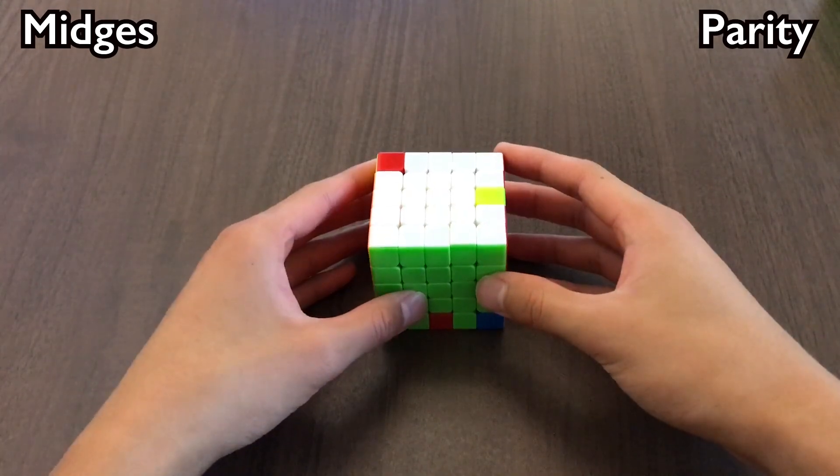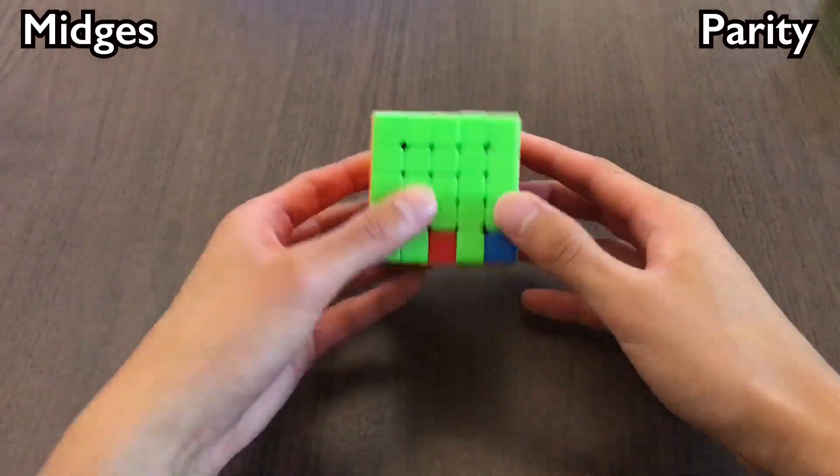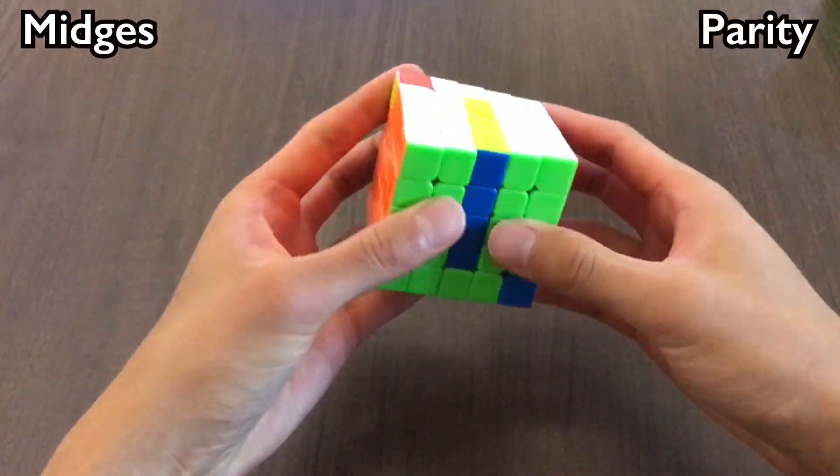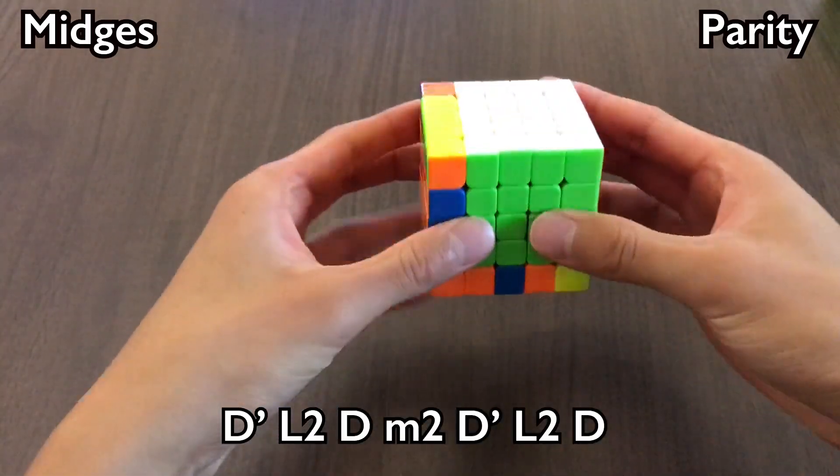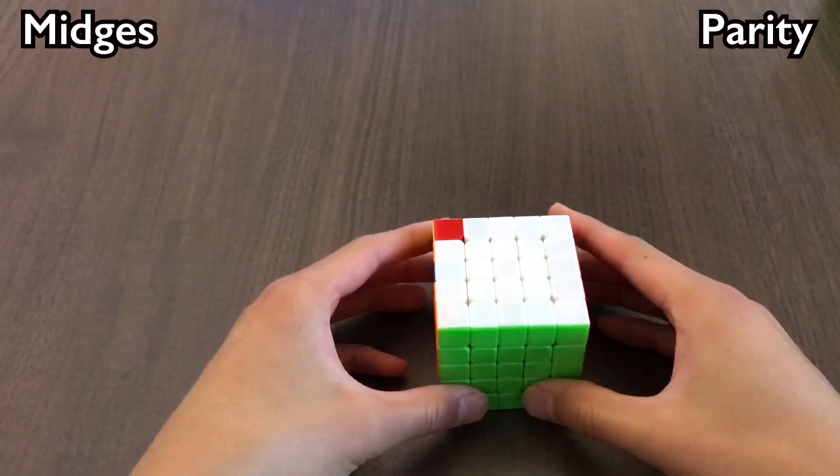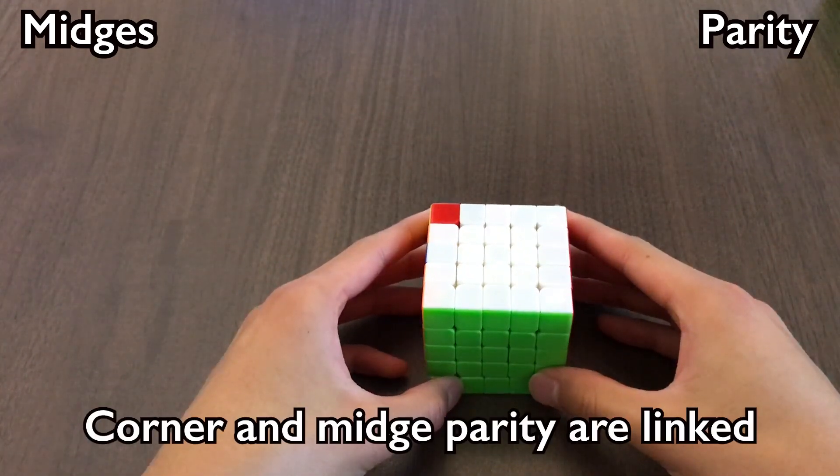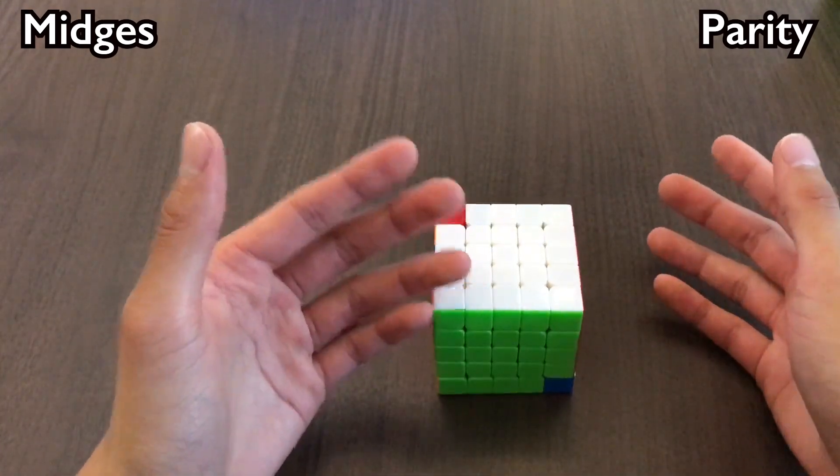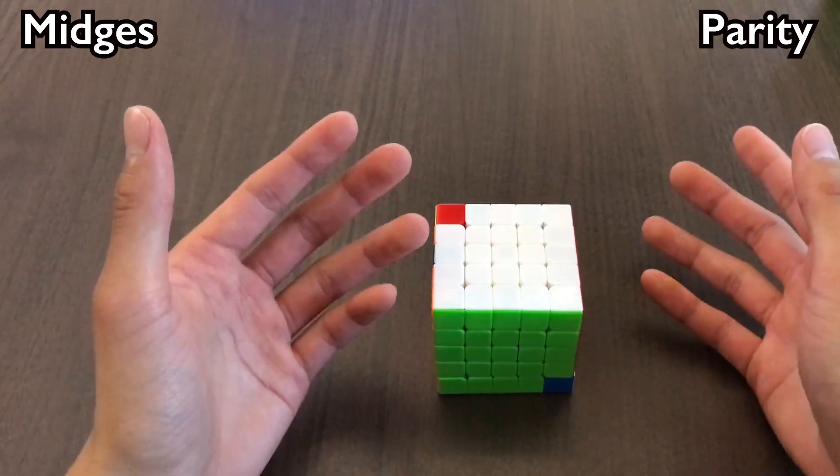Midge parity is the same as edge parity on a 3x3. If we have parity, we will do the last target, and then the parity alg. Now it's important to note that corner and midge parity are linked like on 3-blind. So if you have parity for corners, you will also have parity for midges.